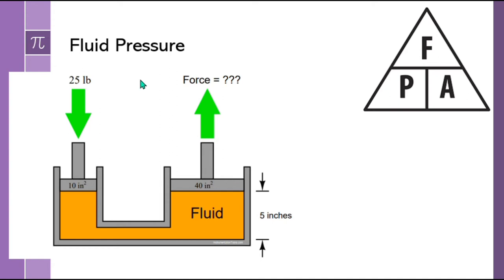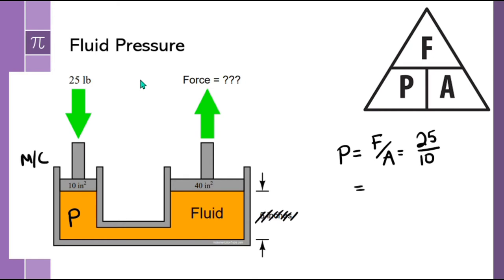Looking at a very simple hydraulic system — ignoring height — let's say this is a master cylinder and we're applying 25 pounds across an area of 10 inches squared. To find pressure, we take force divided by area: 25 divided by 10 gives us 2.5 psi. We have that same pressure everywhere in the fluid. Hydraulic fluids don't compress, and they transmit equal pressure everywhere in the system.